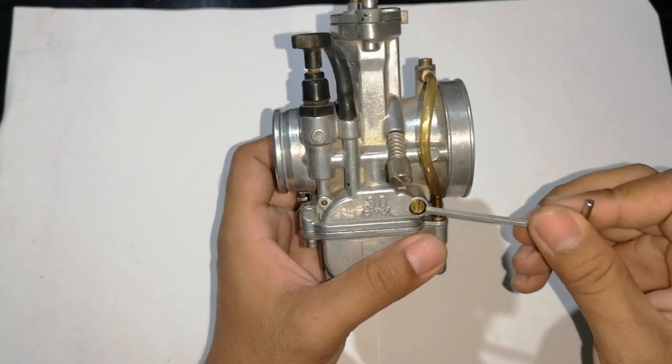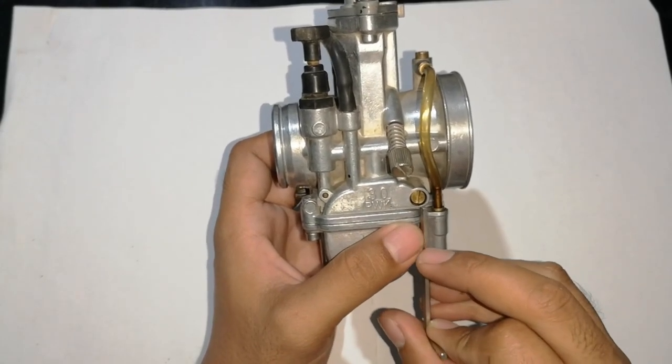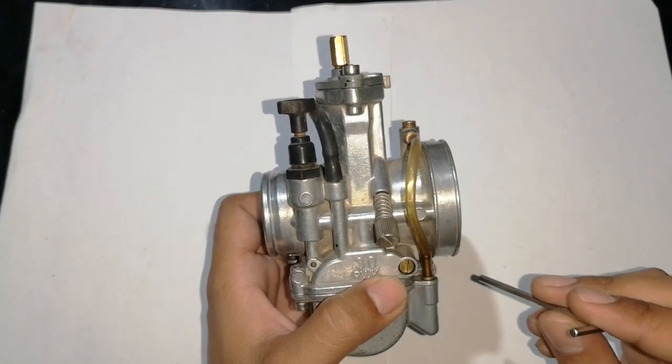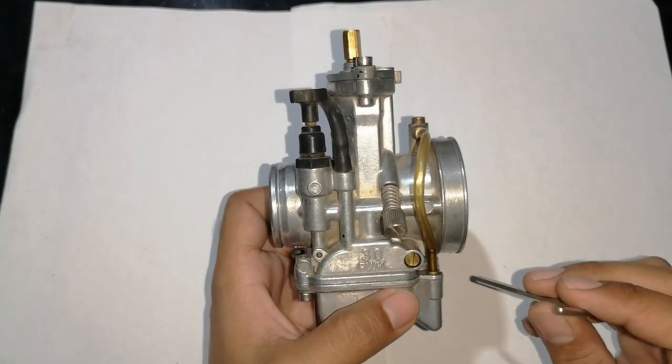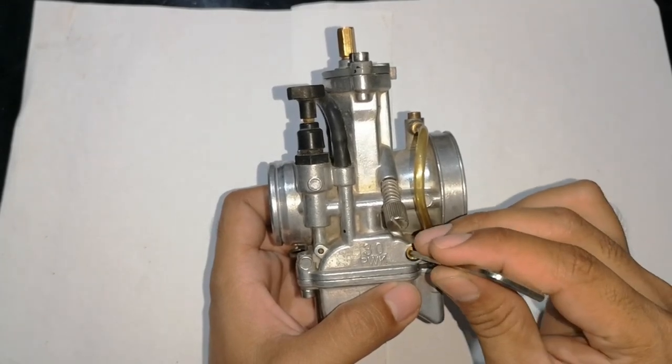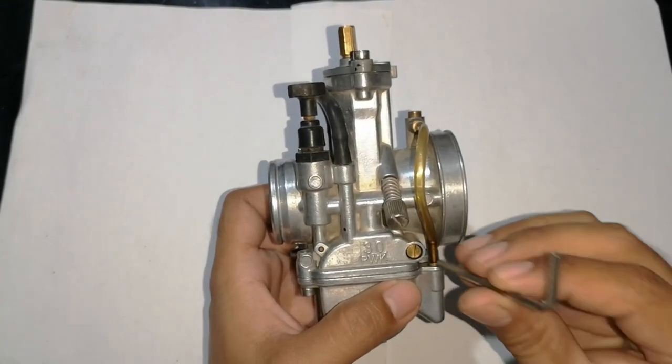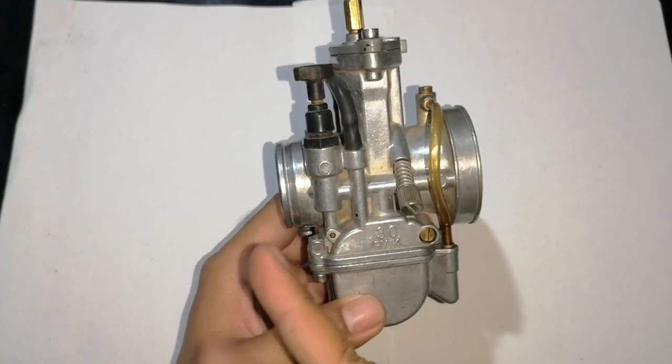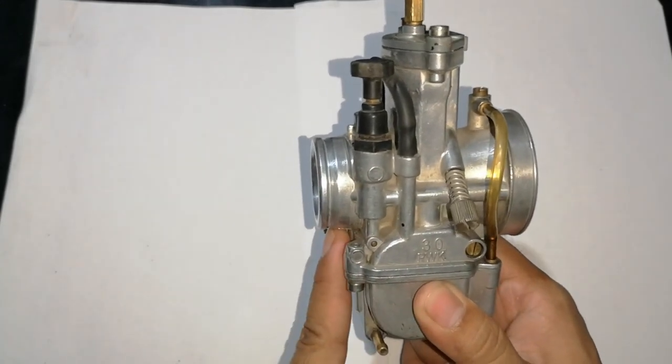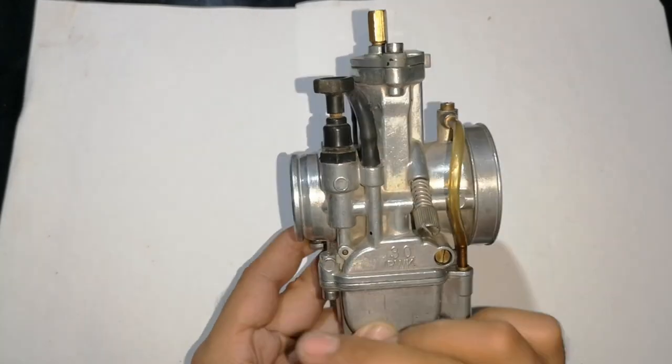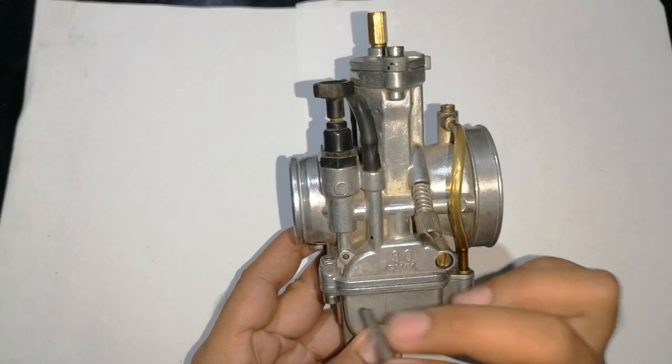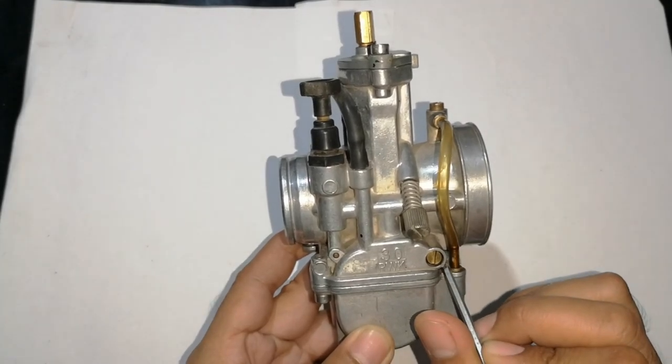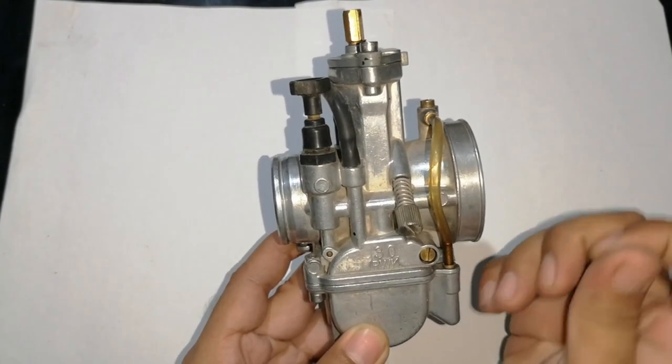So dito naman, dalawa ang klase nito. Kung ang idle mixture screw is nakaposisyon dito sa may bunganga banda, bunganga aside, ibig sabihin, ito ay air screw. Air screw, pag binuksan mo, mas maraming hangin. Pag sinirado, mas kunti ang hangin, mas rich. Kung i-open, mas lean. Kapag naman itong idle mixture screw is nakaposisyon dito na side, sa may manifold na side, lampas dito sa piston, ito ay fuel screw. Kung dito siya nakaposisyon, ipipihit mo pa open, nagre-rich ang mixture. Pag pinihit mo pa sarado, ibig sabihin, nagle-lean ang mixture. Kabaliktaran dito. Usually, ang nakikita natin, nandito.